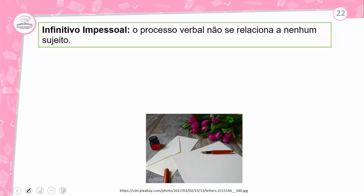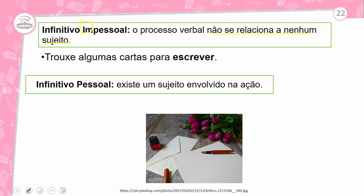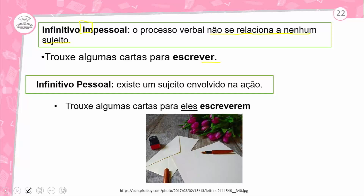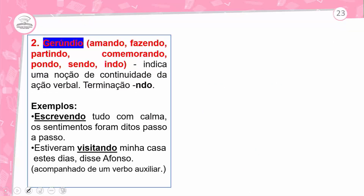No infinitivo pessoal, o processo verbal não se relaciona a nenhum sujeito — é impessoal. Exemplo: 'Trouxe algumas cartas para escrever.' Além do infinitivo impessoal, temos o infinitivo pessoal, quando há flexão. Exemplo: 'Trouxe algumas cartas para eles escreverem.' O impessoal não tem flexão.